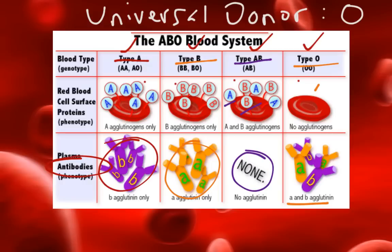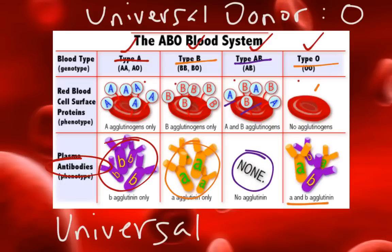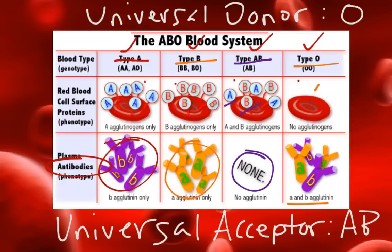If you are type AB, you are the universal acceptor, meaning you can accept blood from people who are type A, type B, type AB, and type O.